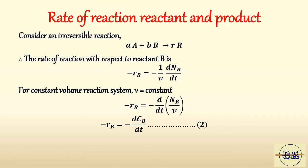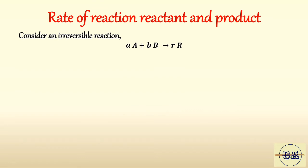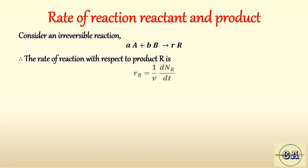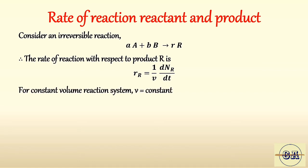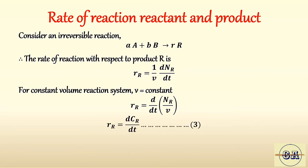Now let's write the rate of reaction for product R. Since R is a product, the rate of formation of product R is: rR equals one divided by V, dNR by dT. There is no minus sign because as the reaction proceeds, the number of moles of product R increases. For a constant volume batch reactor, since CR equals NR by V, the rate of reaction of product R is: rR equals dCR by dT.